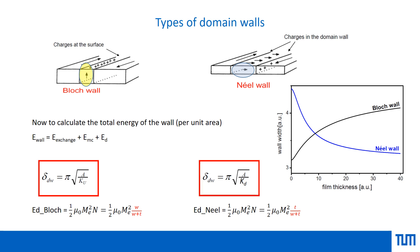Before closing the discussion of Bloch and Néel walls for 180-degree domains, it is worth mentioning that there are much more complicated domain wall situations. One example is cross-tie walls, which represent an intermediate situation between Bloch and Néel walls. Many more mixtures and combinations of wall types are possible.